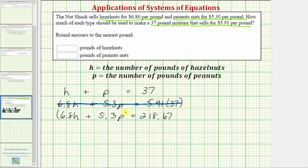So let's go ahead and clear the decimals from this equation by multiplying both sides by 100. We'll multiply the left side by 100 and the right side by 100. By doing this, 100 times 6.8h would be 680h plus 5.3p times 100 is 530p. On the right, 218.67 times 100 is 21,867. So now we'll disregard this equation as well.